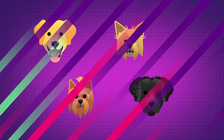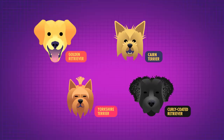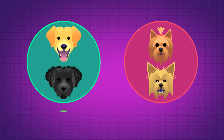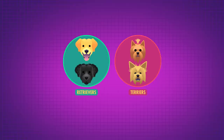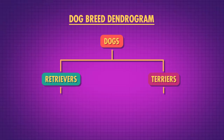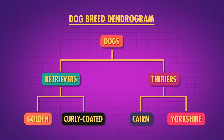For example, look at these adorable dogs. We could use hierarchical clustering to cluster these dogs into groups. First, each dog starts off as its own group. Then we start merging clusters together based on how similar they are — we'll put these two dogs together to form one cluster, and these two dogs together to form another. Each of these clusters — we could call this one retrievers and this one terriers — is made up of smaller clusters. Now that we have two clusters, we can merge them together so that all the dogs are in one cluster. This graph of how the clusters are related to each other is called a dendrogram. The further up the dendrogram that two clusters join, the less similar they are. Golden and curly-coated retrievers connect lower down than golden retrievers and cairn terriers.